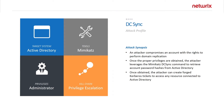In this video we will be looking at the DCSync attack, which is part of Mimikatz. The idea of this attack is to use native Active Directory replication capabilities to request and receive sensitive information about accounts from Active Directory, such as their NTLM password hashes. This is an interesting attack because it can be performed without running any code or performing any logons to domain controllers, so it's very difficult to detect and very difficult to prevent.